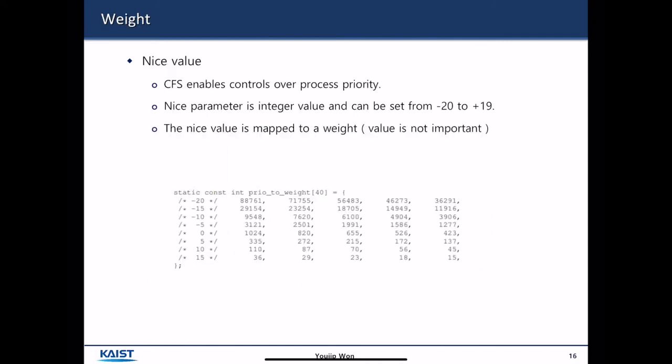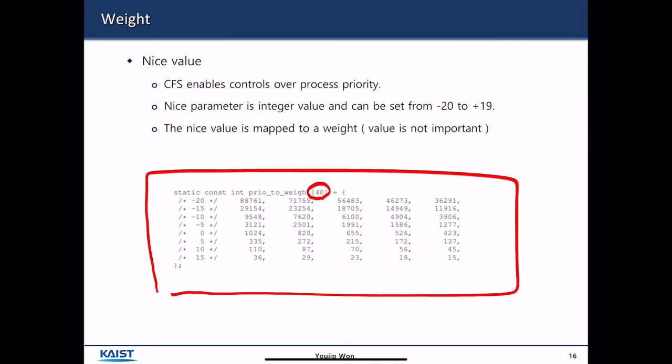There is a notion of nice as we have seen before, but instead of directly applying nice value to the CPU in computing the CPU priority, CFS scheduler defines a certain table that defines a weight value for each nice value. This is the table. So it defines 40 integers for each nice value from negative 20 to plus 19. And then each nice value is mapped as a weight.